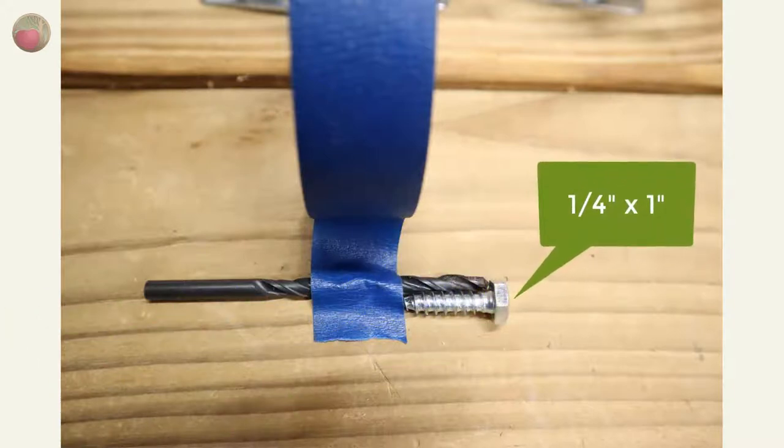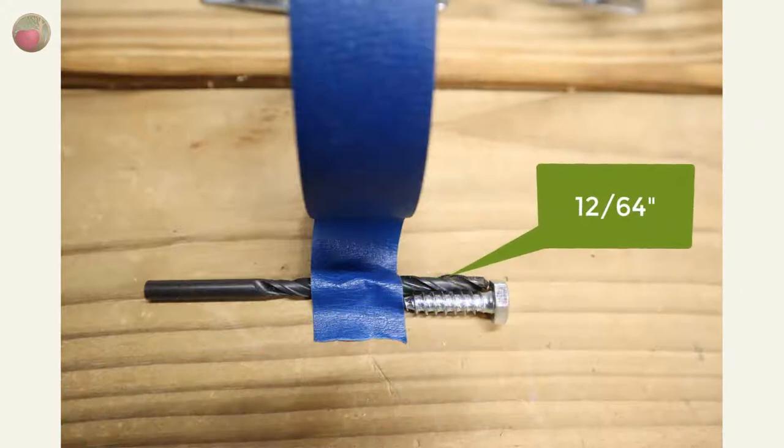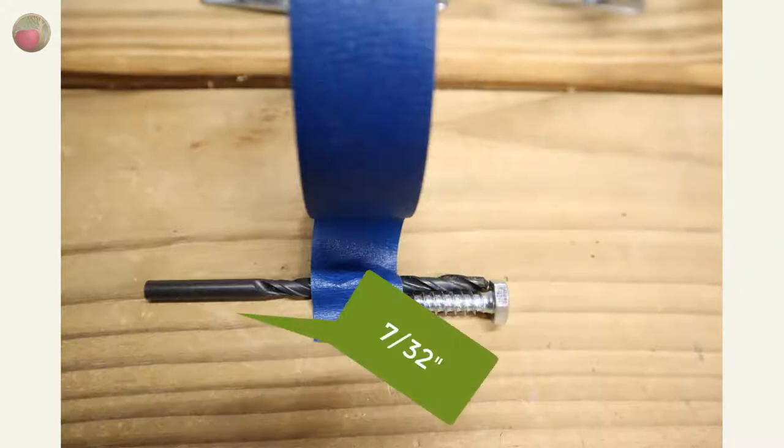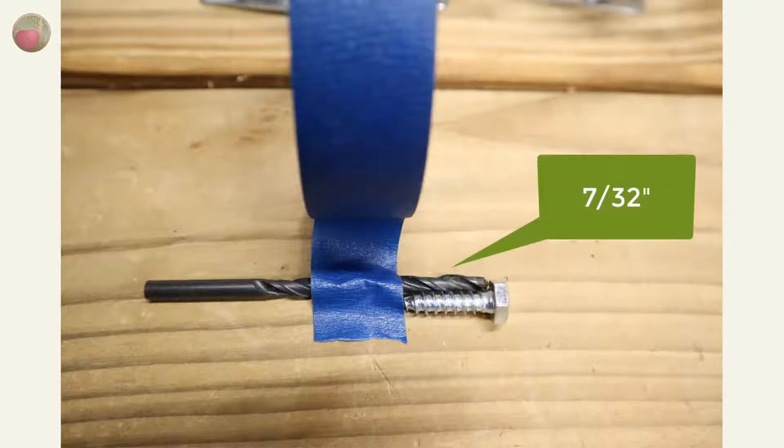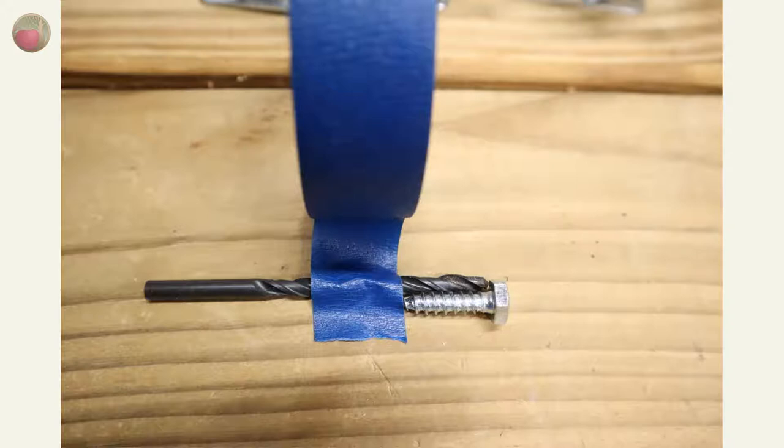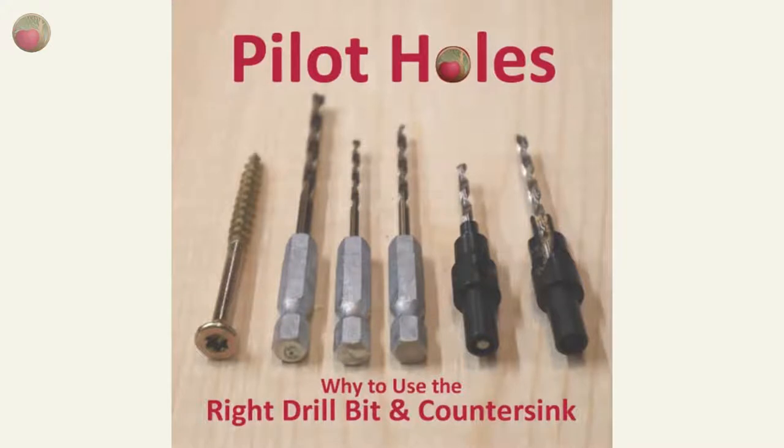The drill bit I used for the pilot hole was 12⁄64ths of an inch, and you could use a 7⁄32nd inch. And here you can see my quick and dirty method for marking my bit with tape so that I don't drill too deep. You can also see my post on pilot holes and why using the right drill bit and countersink is so critically important, and how I determine what size bit to use.